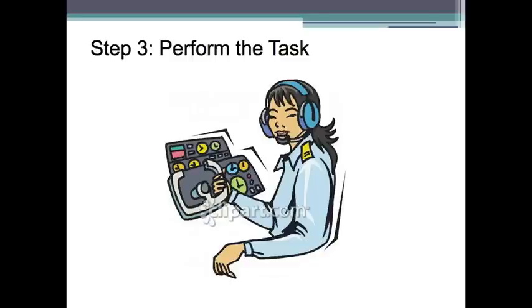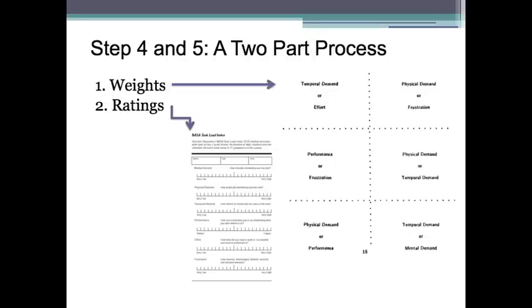If the NASA TLX is being used for research, step 3 is when the user performs the task. Otherwise, the task may have already been completed at an earlier time. The actual subjective measures come from the next two steps, where the user decides the weight of each dimension or factor and later rates each on the NASA TLX scale.